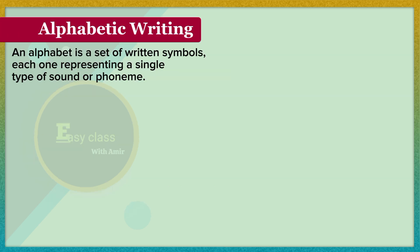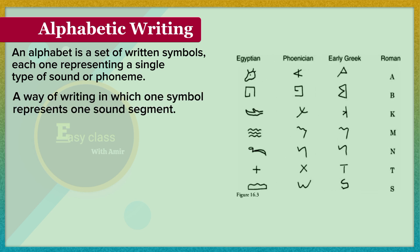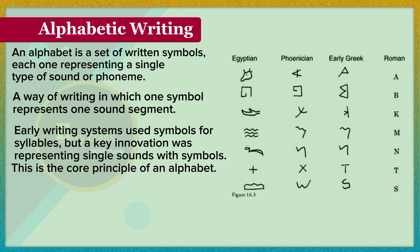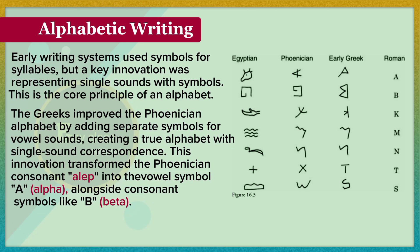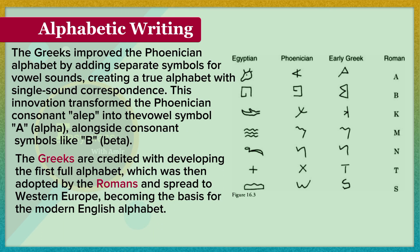Alphabetic writing. An alphabet is a set of written symbols, each one representing a single type of sound or phoneme — a way of writing in which one symbol represents one sound segment. Early writing systems used symbols for syllables, but a key innovation was representing single sounds with symbols. The Greeks improved the Phoenician alphabet by adding separate symbols for vowel sounds, creating a true alphabet with single sound correspondence. This innovation transformed the Phoenician consonant aleph into the vowel symbol alpha, alongside consonant symbols like beta. The Greeks are credited with developing the first full alphabet, which was adopted by the Romans and spread to Western Europe, becoming the basis for the modern English alphabet.